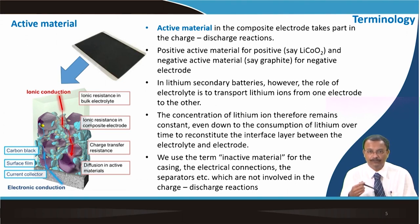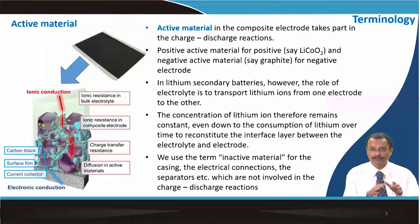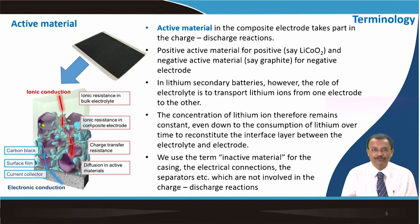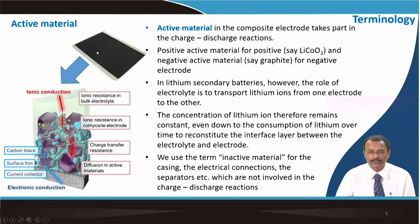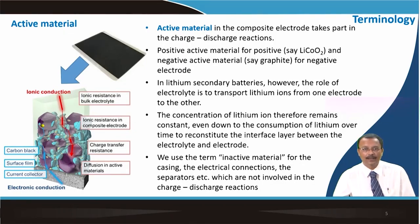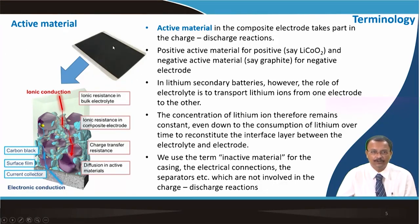We use the term inactive material for material added inside the electrode for various purposes. The casing of the battery, the electrical connections, and the separator between two electrodes — which are not involved in the charge-discharge reaction — are all called inactive material. A typical electrode for a lithium-ion battery has a current collector onto which the active material is mixed with inactive materials: acetylene black, which conducts electrons, and PVDF binder, which adheres the whole mass to the current collector.